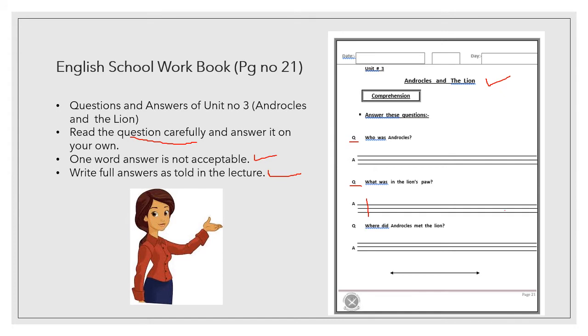Next question number 3. Where did Androcles meet the lion? Do you remember? It's not in the desert. In the desert, he ran and ran and then he went to a specific place. What was that area? What was that place called? That place was called cave. Very good. So, what you will do? Where did Androcles meet the lion? He met the lion in the cave or Androcles met the lion in the cave. Very good.